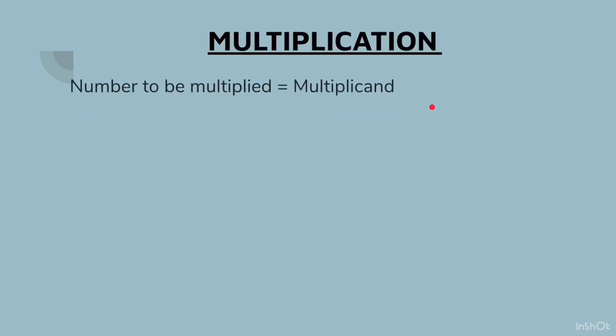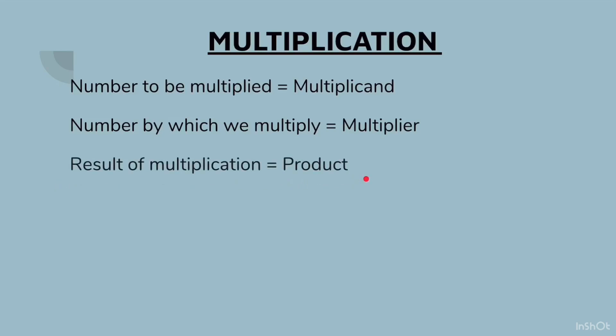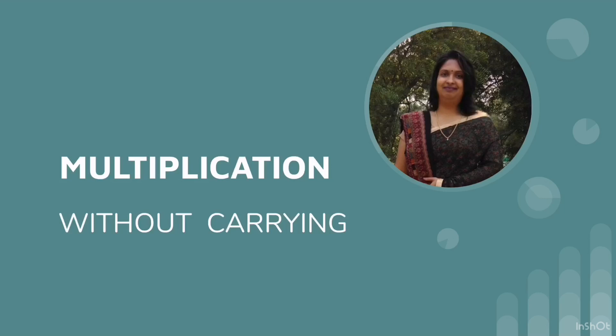A few more facts: number to be multiplied is called multiplicand, number by which we multiply is called multiplier, the result of multiplication is called product. Let us take an example: 16 × 10 = 160. So 16 here is the multiplicand, 10 is the multiplier, and 160 is the product. Now let us do multiplication without carry.